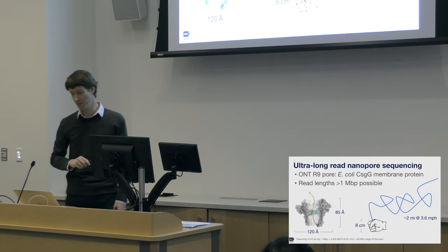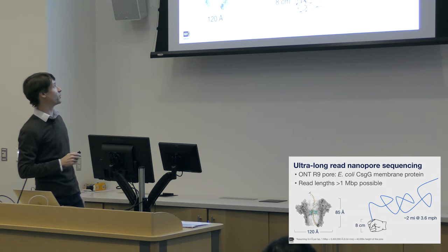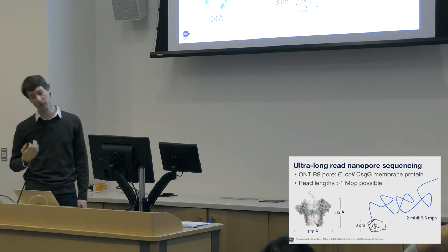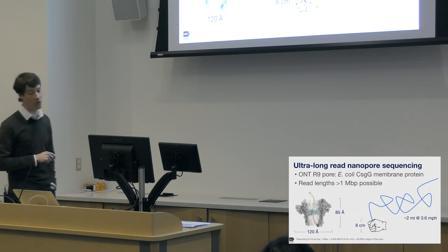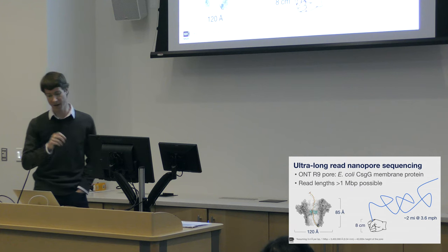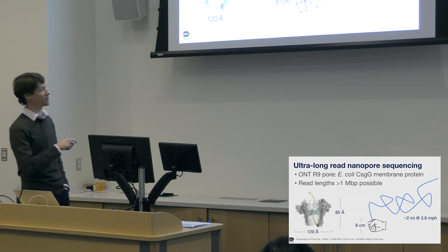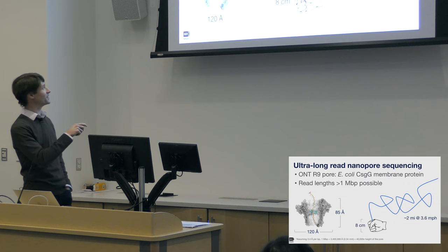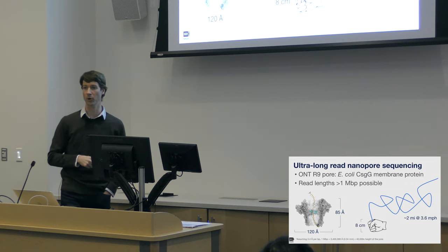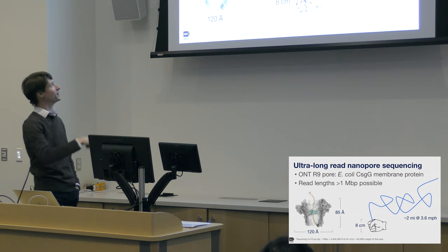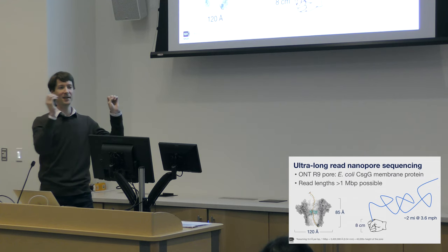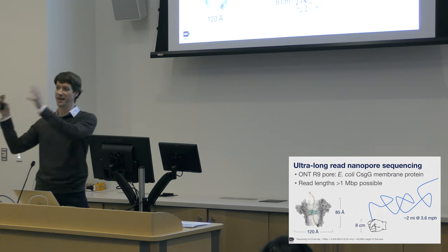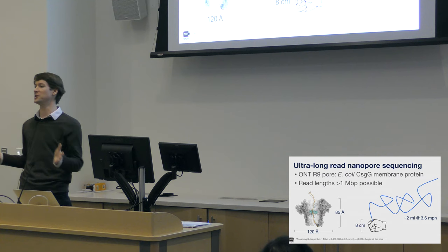The way nanopore sequencing works is complete black magic to me. ONT, Oxford Nanopore, figured out a way to take an actual transporter protein from E. coli - a CSGG membrane protein - engineered it a little bit, figured out a way to have it insert itself into lipid membranes and process single strands of DNA through that little protein nanopore. There's a narrow constriction site in the middle of the pore. Ionic current flows through the pore in real time, and you measure changes in that current as the DNA strand gets passed through. Then you apply machine learning to that signal to deconvolute that current-over-time trace into A, C, G, and Ts, and it works.